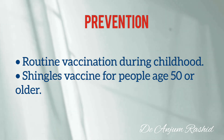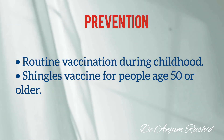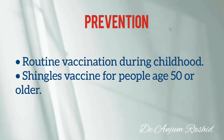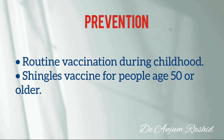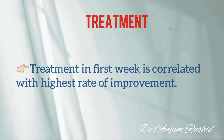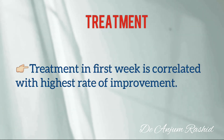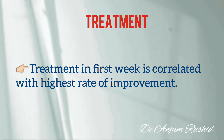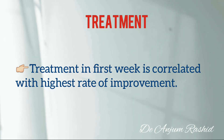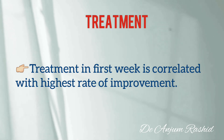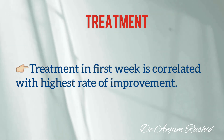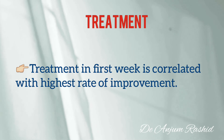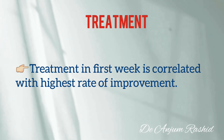For prevention, children are now routinely vaccinated against chickenpox, which greatly reduces the chance of infection. A varicella zoster virus vaccine is also recommended for people aged 50 or older. Prompt treatment of Ramsay Hunt Syndrome can ease pain and decrease the risk of long-term complications. Evidence from clinical studies indicates that starting treatment within the first week is correlated with the highest rate of improvement, although treatment started later still provides some benefit.